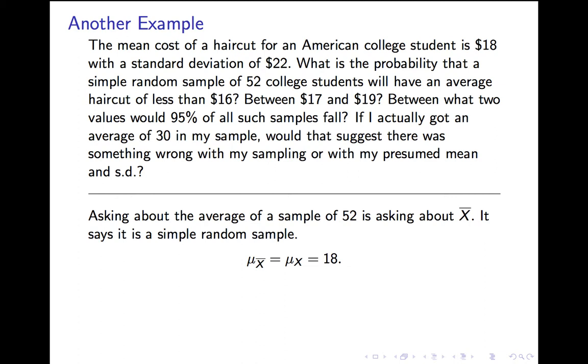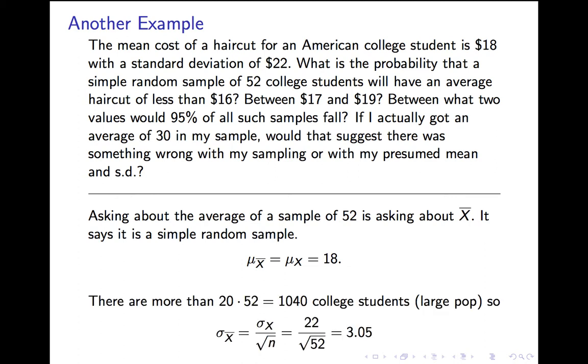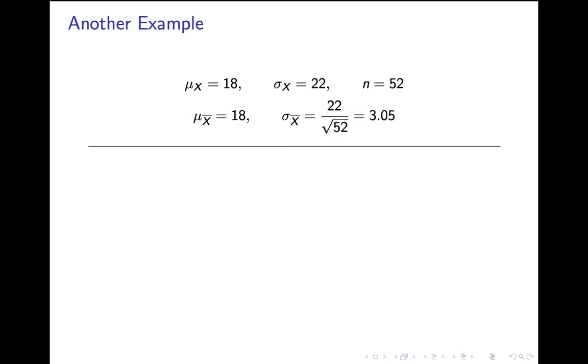So, asking about the average of a sample of 52 is asking about x-bar. It says it's a simple random sample, so we meet assumption 1. Therefore, mean of x-bar is 18. There are more than 20 times 52, 20 times the sample size, college students. More than 1,000 college students in the world, so the large population assumption is met. So we can assume that σ of x-bar is 22, the population standard deviation, divided by the square root of 52, which is the sample size, or 3.05. That's the mean and standard error.